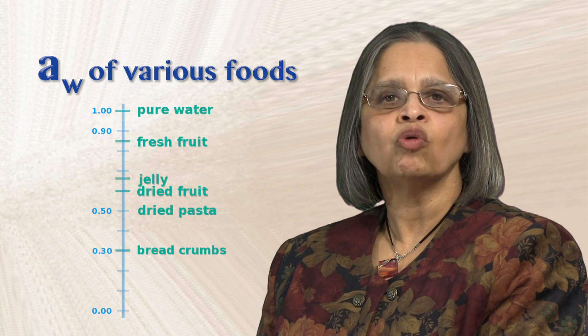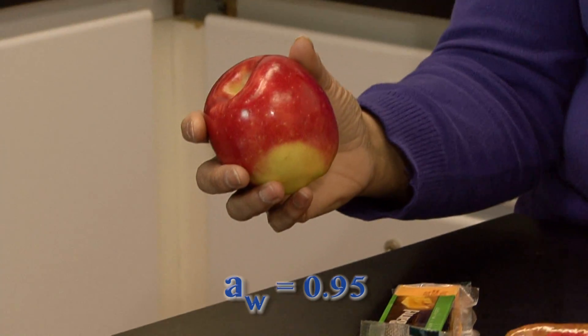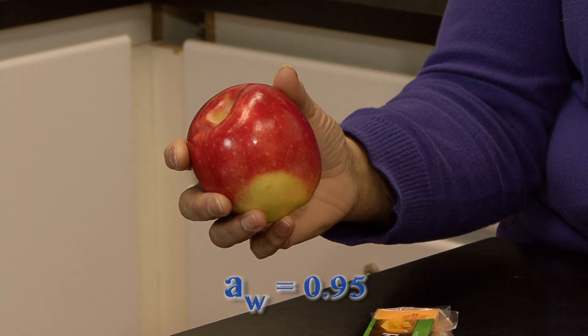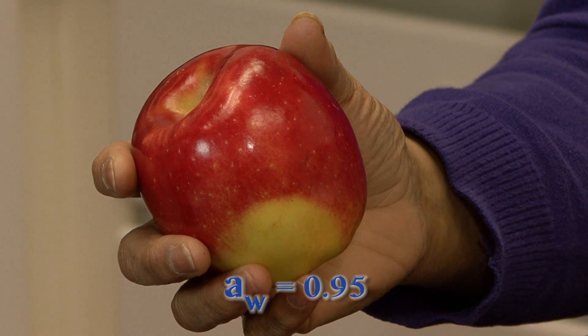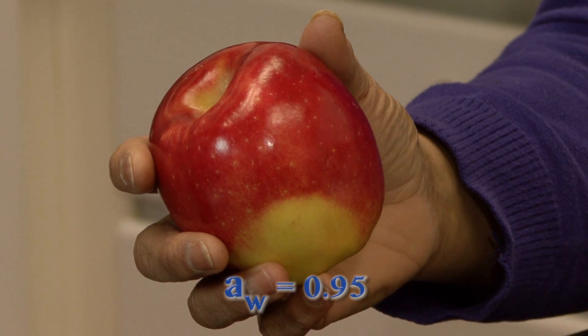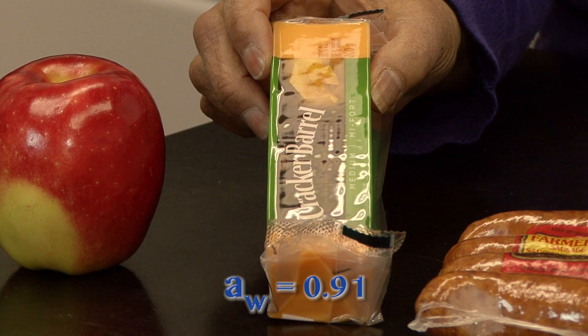Usually products that contain a lower percent moisture have lower water activities. Here we have an array of food products from a high water activity with the apple to the lowest water activity with the breadcrumbs. The apple has a water activity of 0.95 and will support the growth of bacteria such as E. coli, Clostridium perfringens, many spoilage organisms, and some yeast. The cheese has a water activity of 0.91 and will support the growth of Salmonella, Lactobacillus, and some molds.